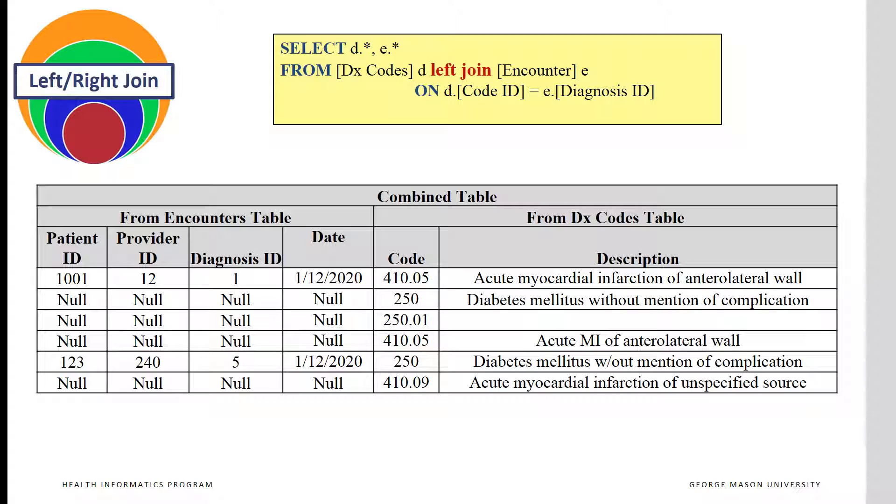The combined table now has seven rows. In four rows, the encounter table is left as null.